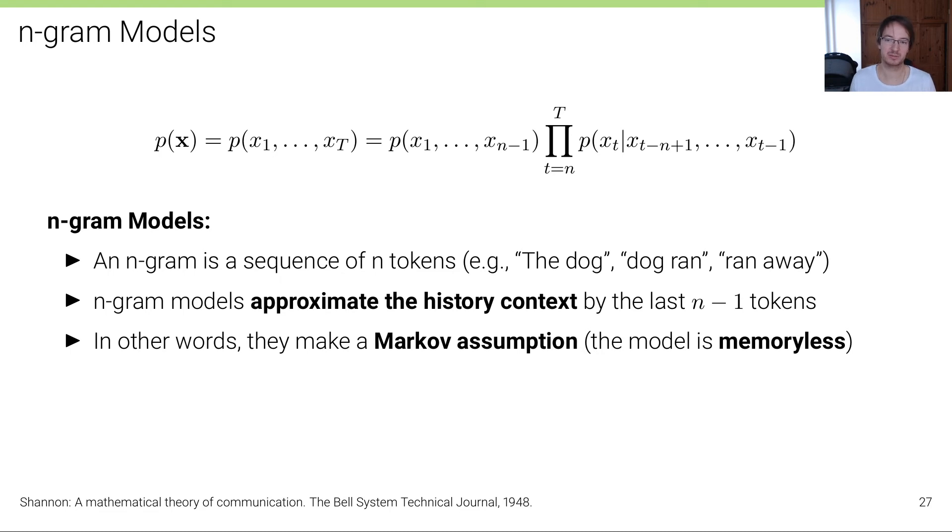For a bigram, for instance, we would just consider xT given xT-1. In other words, what this means is that we make a very strong Markov assumption, or in other words, the model is memoryless. The t-th word does not depend on any word that comes before xT-n+1.